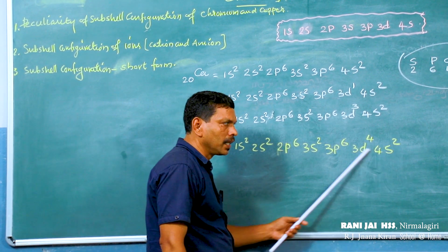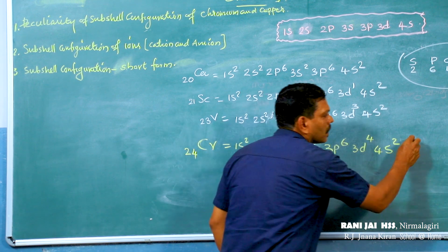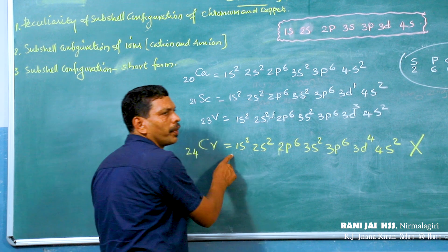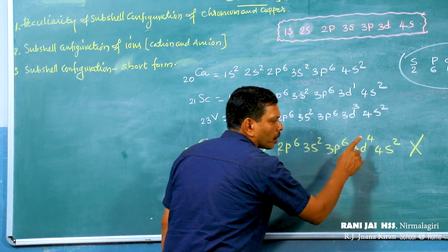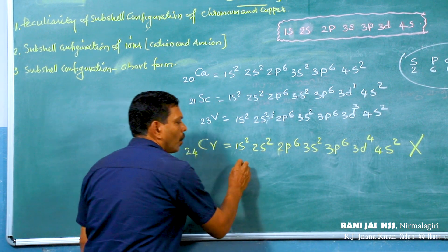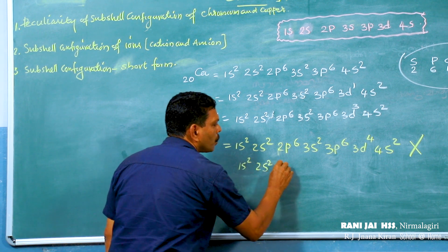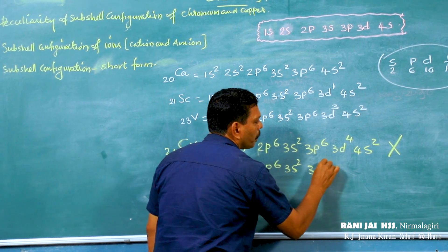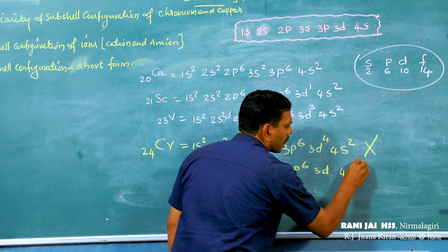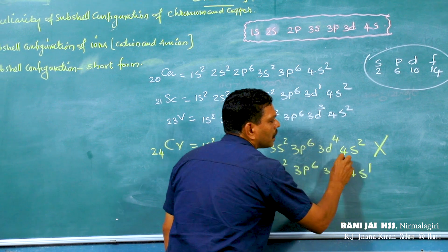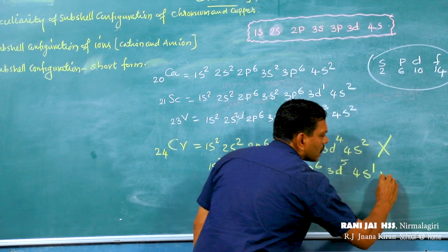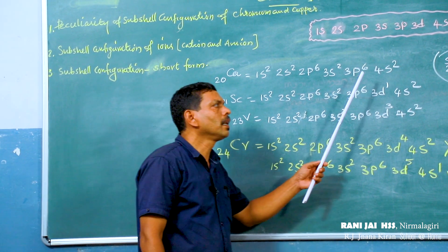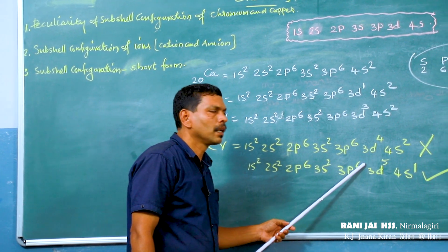In the case of chromium, the straightforward configuration is not the correct one. The correct subshell electronic configuration of chromium is: 1s2, 2s2, 2p6, 3s2, 3p6, 4s1, 3d5. This is the correct electronic configuration of chromium. That is the difference between chromium and other elements.